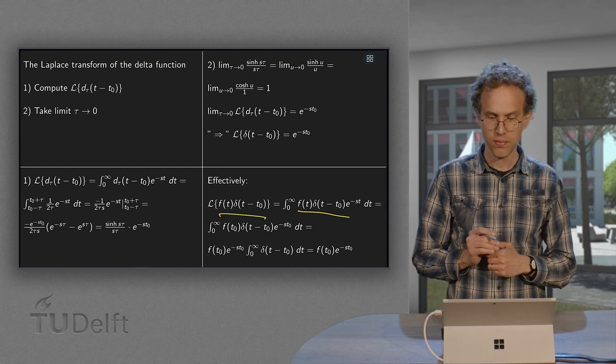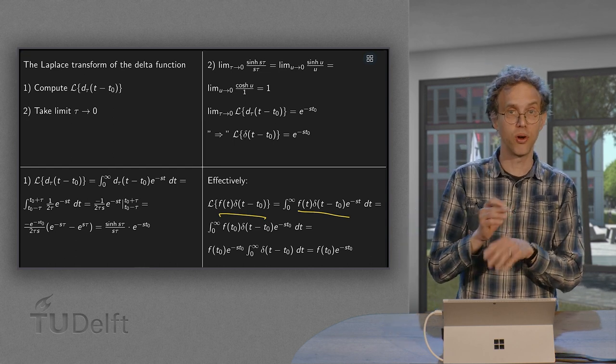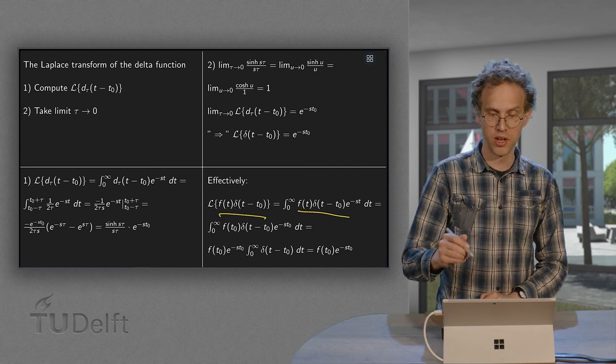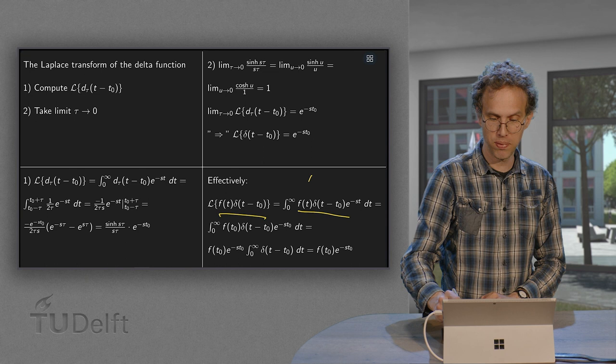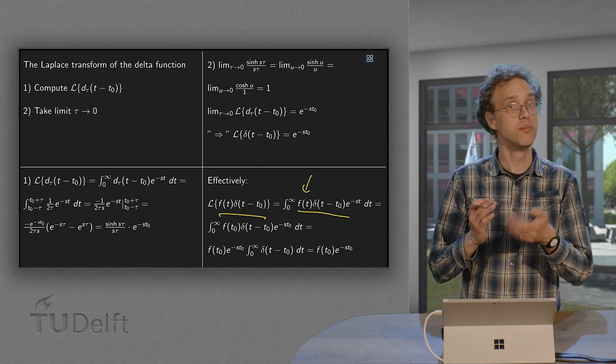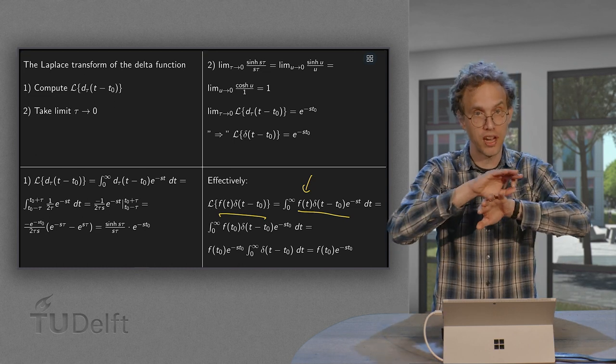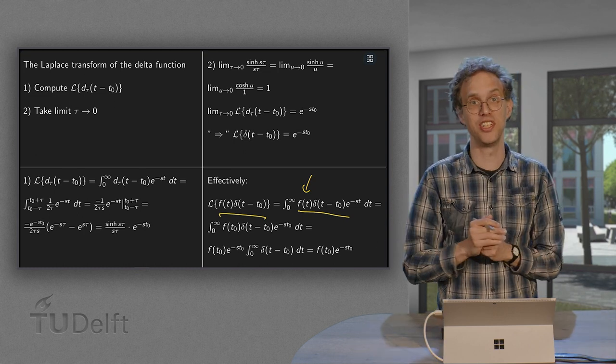Now this delta function is almost everywhere zero, except at t equals t₀. So you basically can replace the function value of f(t). It doesn't matter what it is. It only matters what it is at t₀. Because everywhere else the integral is zero anyway.